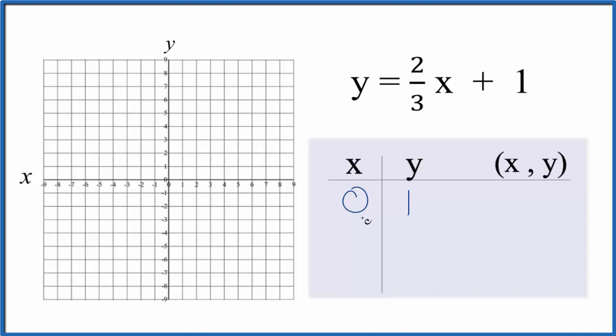So I'd put three in for x. Two-thirds times three would give me two. Two plus one is three. Likewise I could put in negative three because two-thirds times negative three would give me negative two plus one, and that would give me negative one.